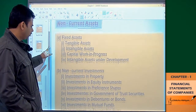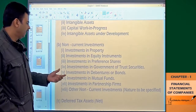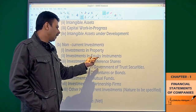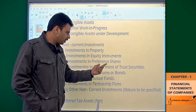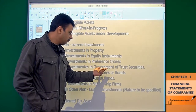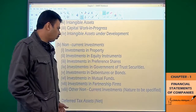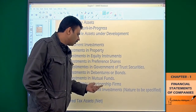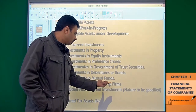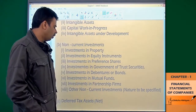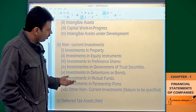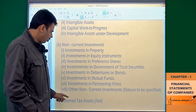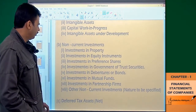Non-current investment is very simple. If I have invested in property, equity shares, preference shares, government bonds, debentures of other companies, mutual funds, or a partnership firm — any kind of money I have invested in — all of these come under non-current investments.